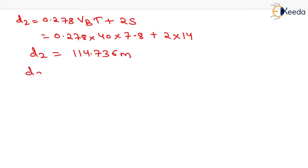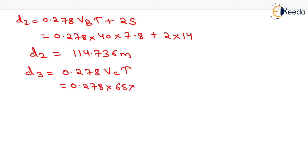We will compute the value of D3, which equals 0.278 × VC × T. The value of VA and VC are the same, so it equals 0.278 × 65 × 7.8. On solving this, we get D3 equals 140.946 m.